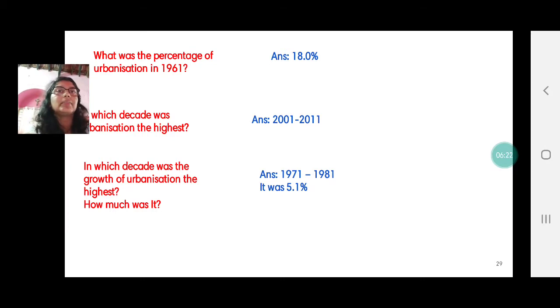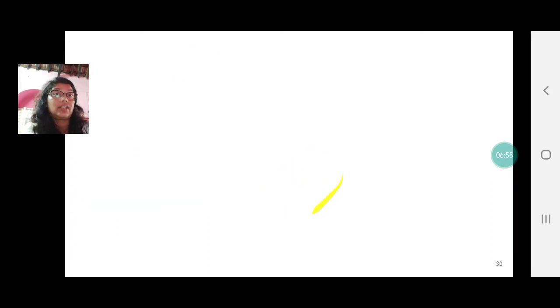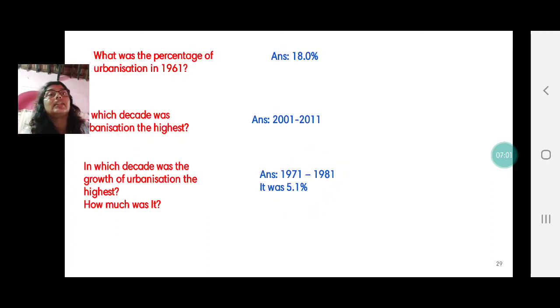So to be on the safe side let us become a little smarter. We will write the decade between 2001 and 2011 urbanization was highest, it was 31.2 percent. But the growth of urbanization was highest between the decades 1971 to 1981 and that was 5.1 percent. And we can underline the word growth so the evaluator understands that you know the answer well because we really don't know sometimes the model answer gives us this date or that date. We need to be a little smarter.